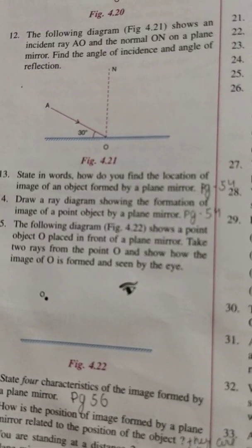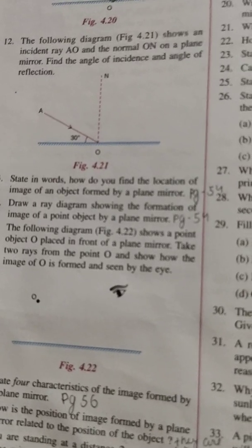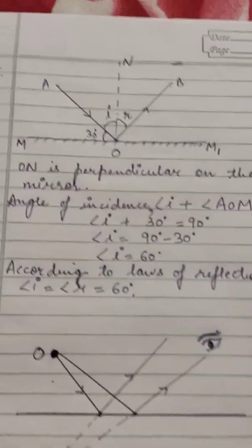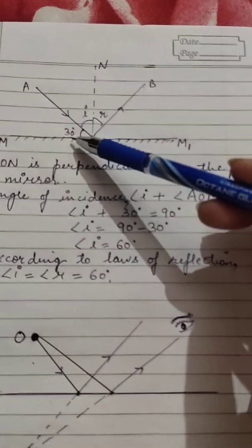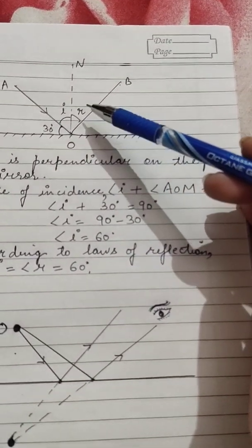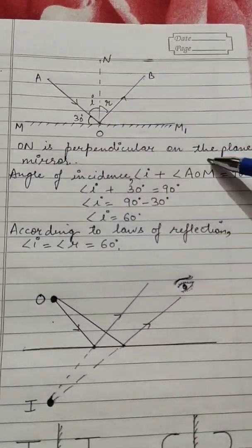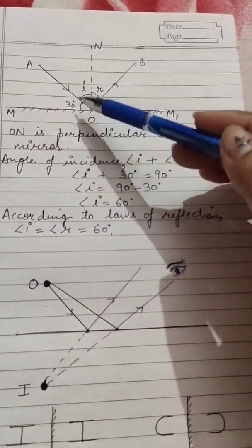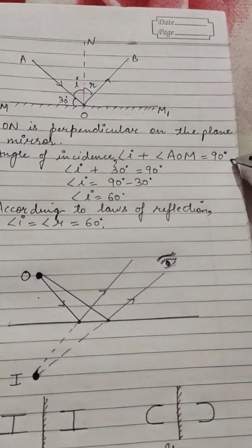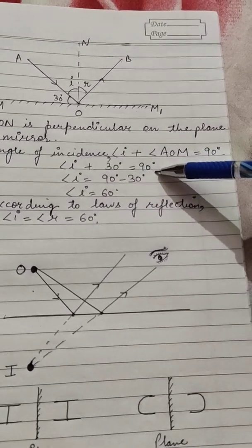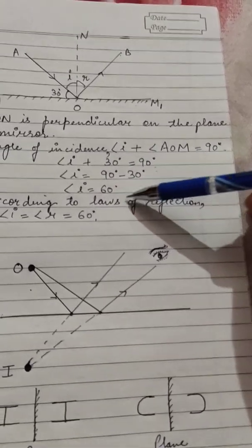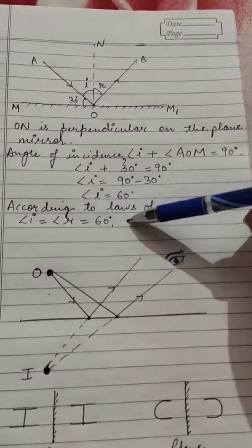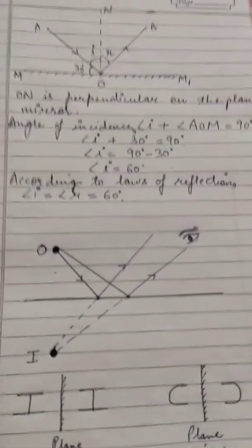Question number 12: the diagram shows an incident ray AO and the normal ON on the plane mirror. Find the angle of incidence and angle of reflection. The angle AOM is given as 30 degrees. Since ON is perpendicular to the plane mirror, the complete angle is 90 degrees. So angle I plus angle AOM equals 90 degrees, giving angle I equals 90 minus 30 equals 60 degrees. By the law of reflection, angle of reflection is also 60 degrees.